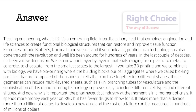We can now print layer by layer in materials ranging from plastic to metal, to concrete, to chocolate, from the smallest scales to the largest. If you take 3D printing and combine it with biology, we have bioprinting, where the building blocks are cell aggregates — what we call bioink particles — composed of thousands of cells that fuse together into different shapes. These geometries can include multi-layered sheets such as skin, and branching tubes for vasculature. The sophistication of this manufacturing technology improves daily to include different cell types and shapes.